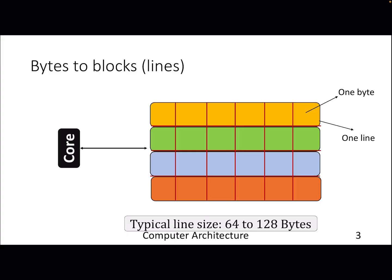In caches, instead of storing data at a byte level, it stores at the granularity called block or line level, where a line is typically a collection of multiple bytes — typically 64 to 128 bytes. This is done because we want to exploit spatial locality.